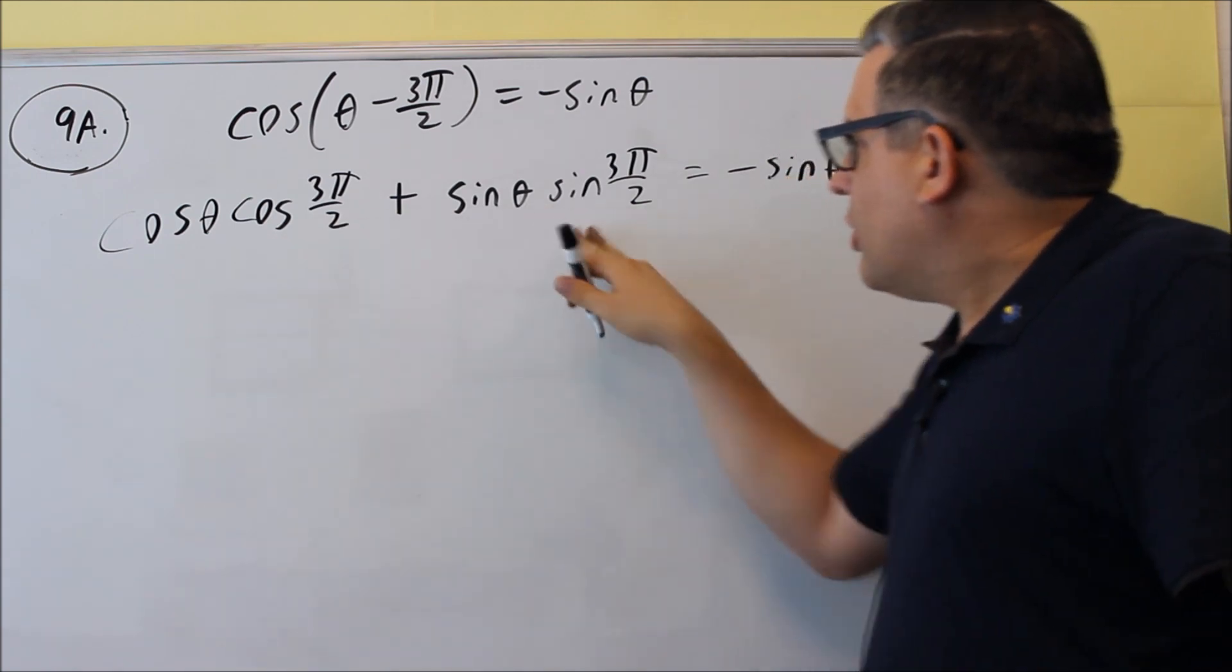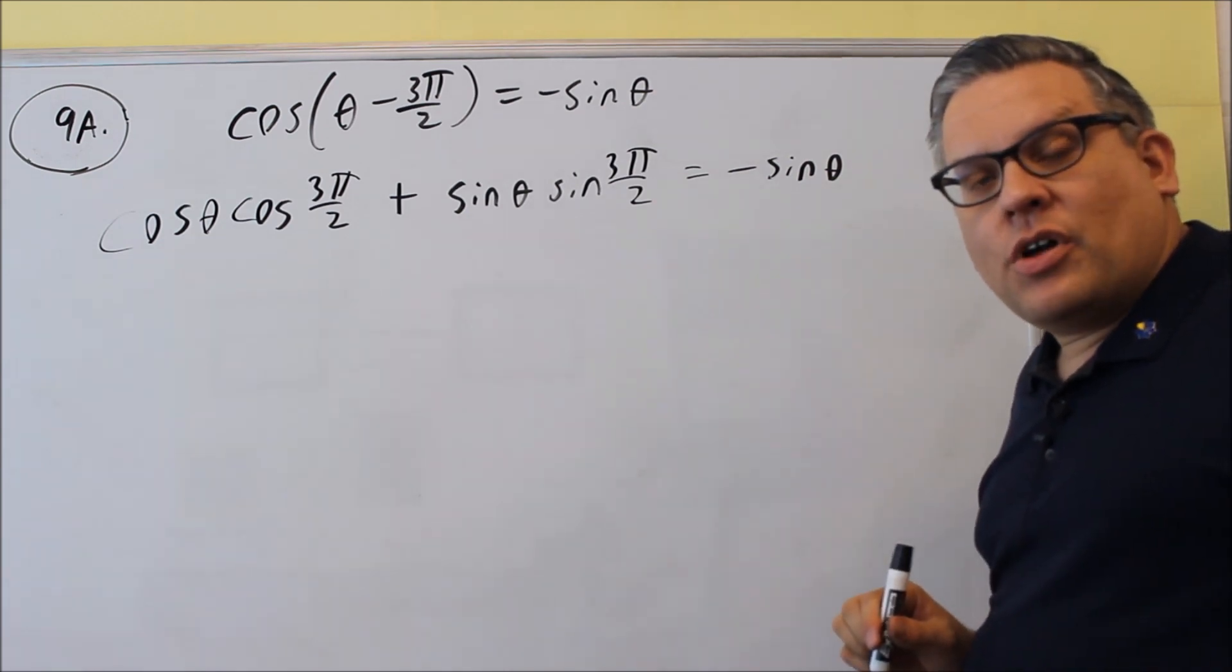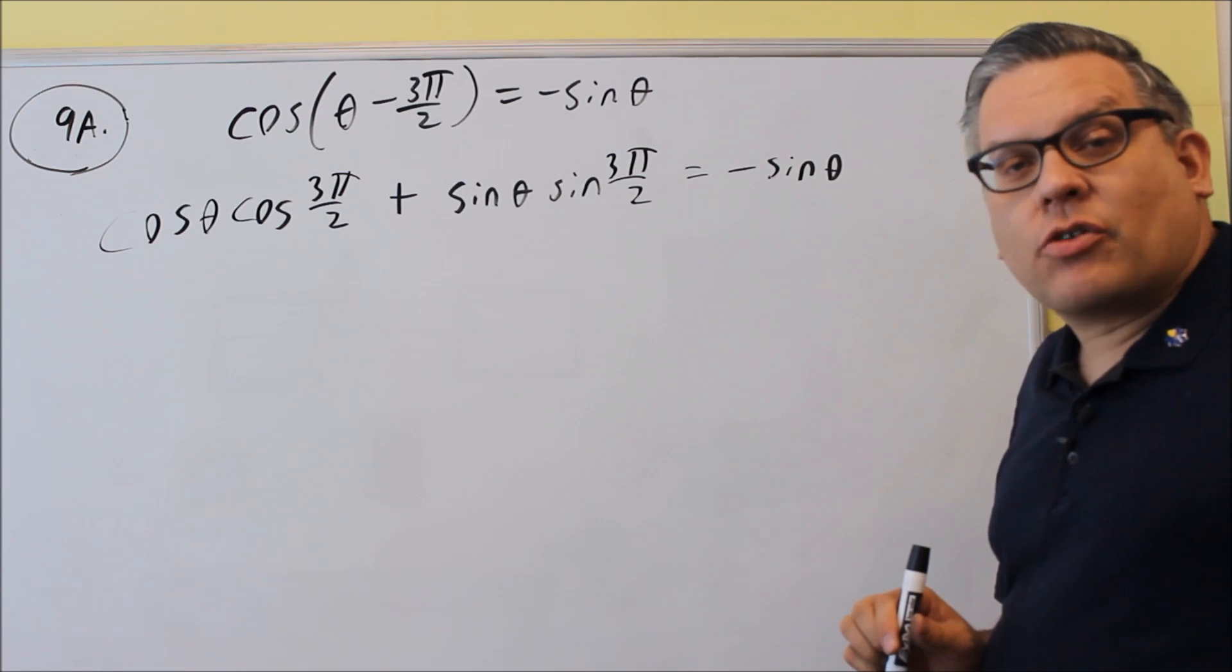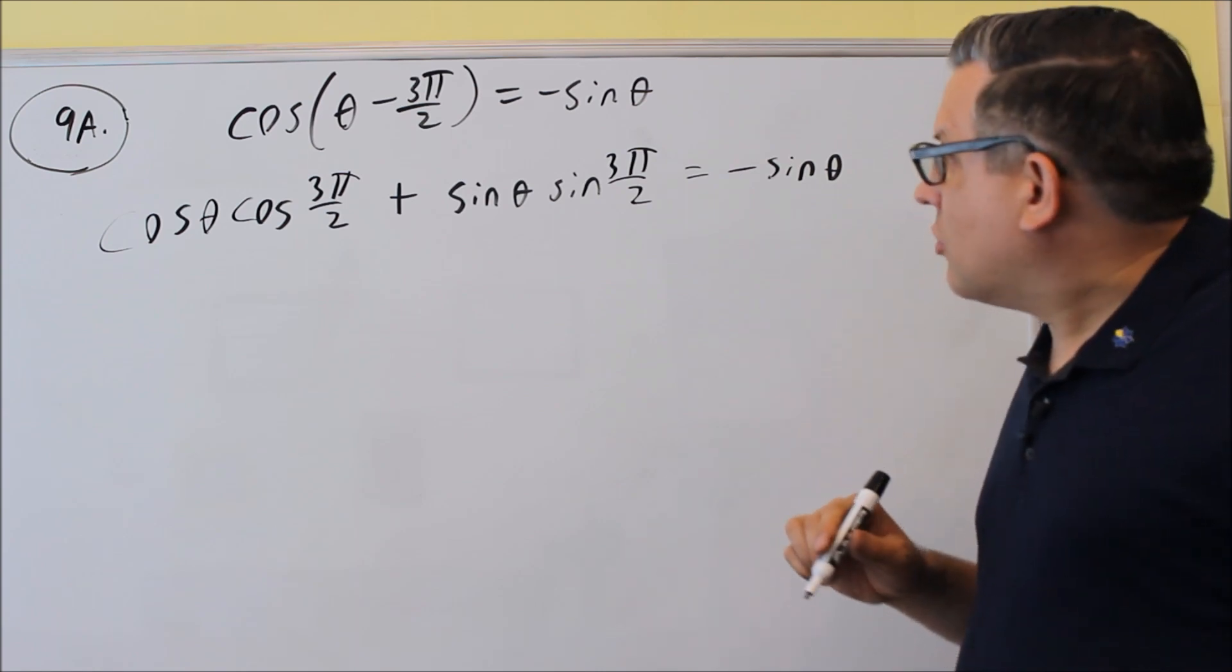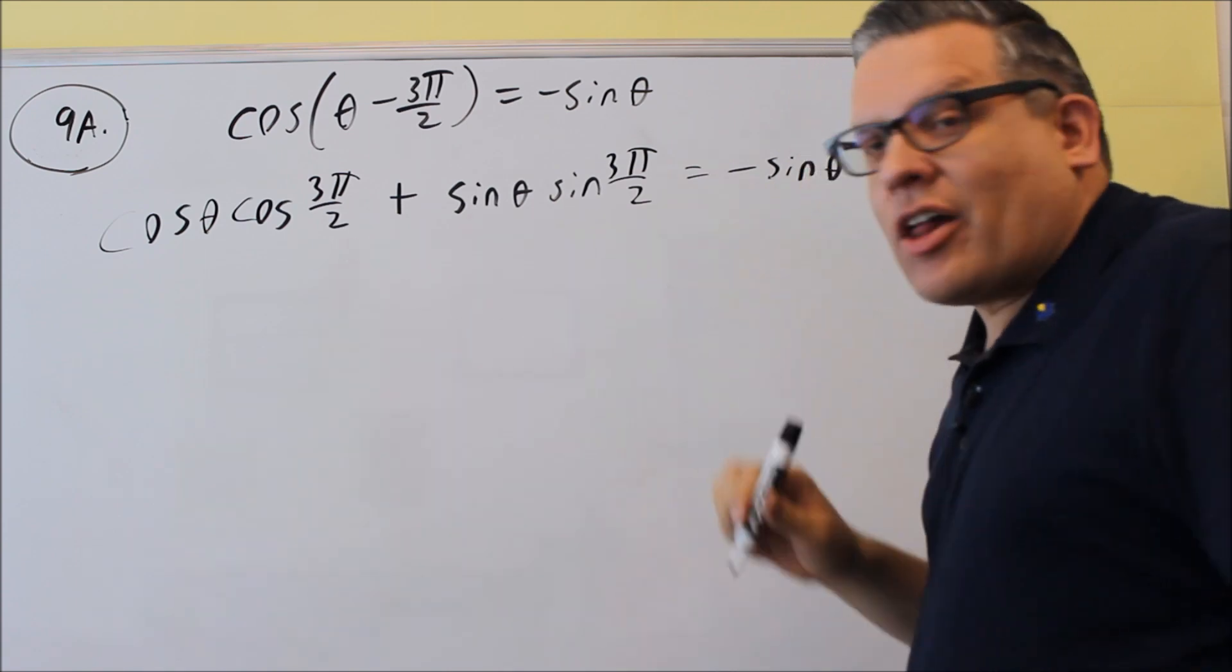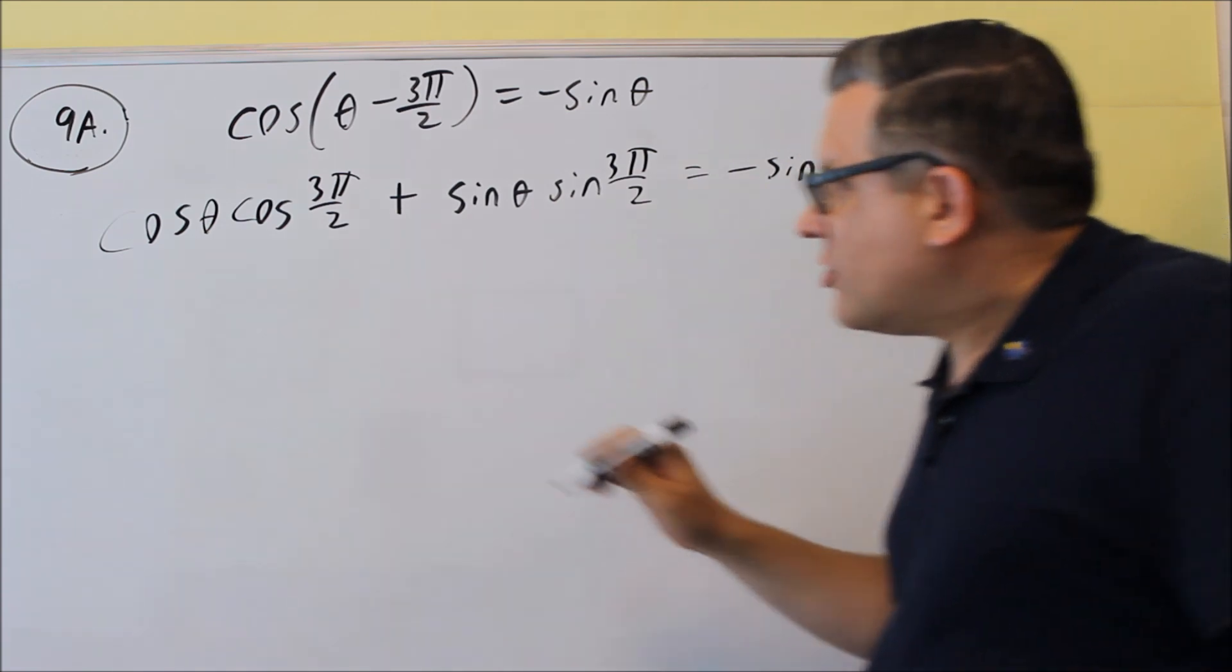Now each of these are values that you can get from the unit circle. So that's going to be at 270 degrees, the bottom of the unit circle, and so this value, this is the x value at 270 degrees, that's going to be a zero.